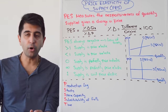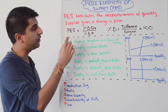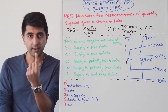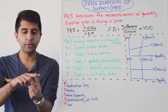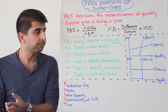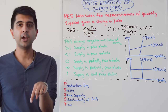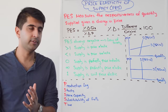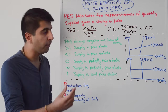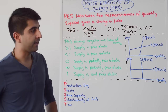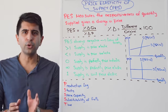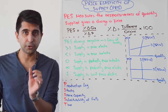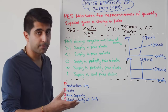We are always going to get a positive number when we compute PES, and that's because of the law of supply. When the price goes up, quantity supplied will go up — positive over positive gives a positive number. When the price goes down, quantity supplied will go down — negative over negative also gives a positive number. So the positive sign is irrelevant; we can ignore that. Just look at the actual number when it comes to interpreting elasticity.